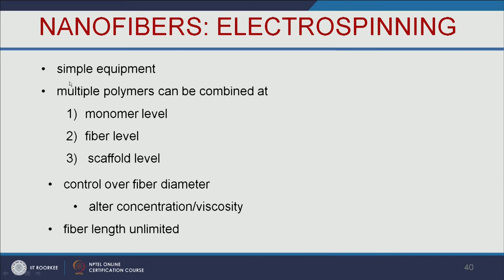The main advantages of electrospun nanofibers include simple equipment, the ability to combine multiple polymers at the monomer, fiber, or scaffold level, control of fiber diameter by altering polymer concentration or viscosity, and unlimited fiber length.